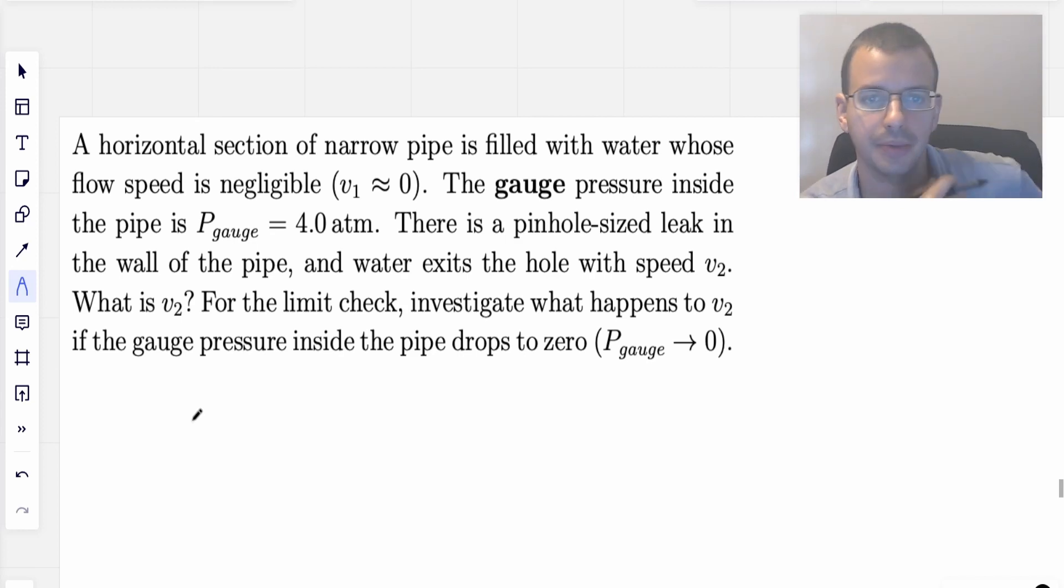A horizontal section of a narrow pipe is filled with water whose flow speed is negligible. The gauge pressure inside the pipe is 4 atmospheres. There is a pinhole-sized leak in the wall of the pipe. The water exits the hole with a speed of v2. What is v2? For the limit check, investigate what happens to v2 if the gauge pressure inside the pipe drops to zero.